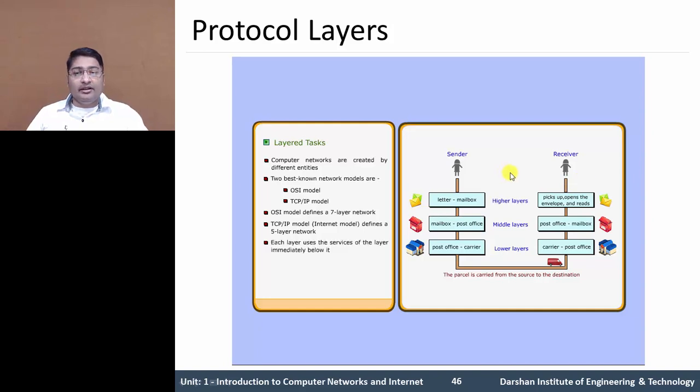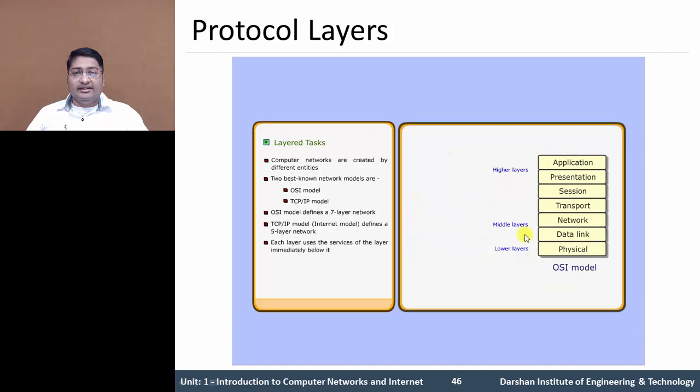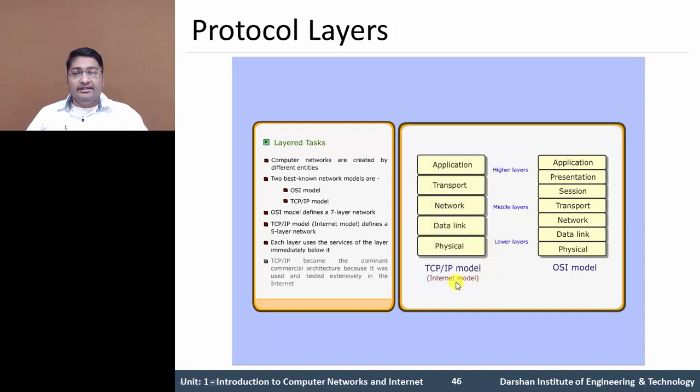Layers use the services of the layer immediately below it. For example, higher layer provides services to middle layer, middle layer provides services to lower layer, and lower layer provides services to the carrier. In OSI layer, it's similar: higher layer, middle layer, and lower layer. Each layer uses the services of the layer immediately below it. In TCP/IP model, it becomes the dominant commercial architecture because it is tested and extensively used in the internet compared to the OSI model.